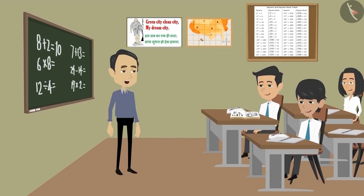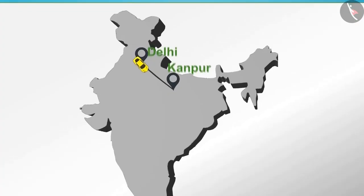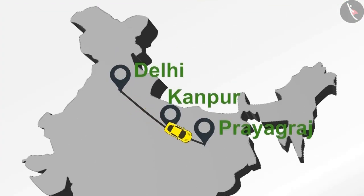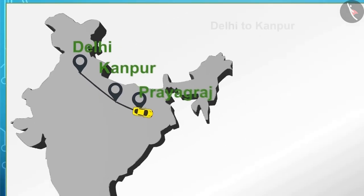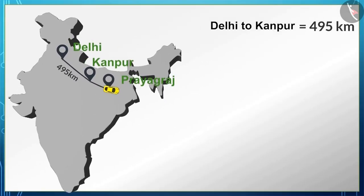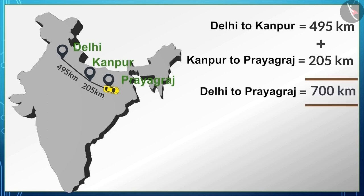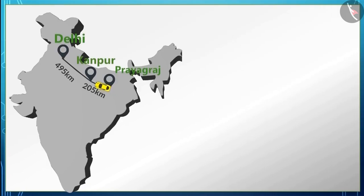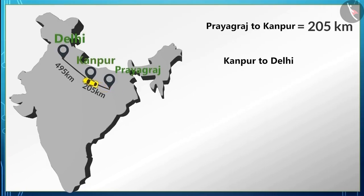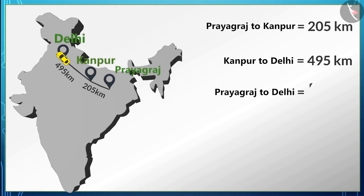In class today, Rahul went from Delhi to Kanpur for some work and then from Kanpur to Prayagraj. The distance from Delhi to Kanpur is 495 kilometers and from Kanpur to Prayagraj is 205 kilometers, so Rahul traveled 700 kilometers in total. When Rahul came back, he went from Prayagraj to Kanpur and then to Delhi — again 700 kilometers.